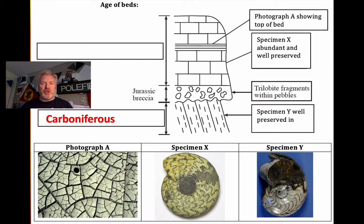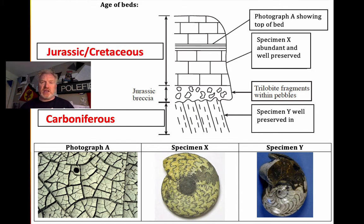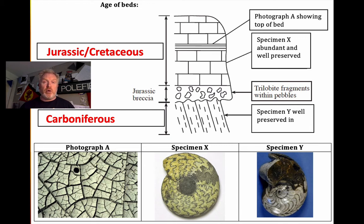The goniatite has a very simple suture line — it's quite curved. These fossils became most abundant in the Carboniferous. The rocks above where we find specimen X are going to be either Jurassic or Cretaceous. We know they must be Jurassic or younger because they're sitting on top of the Jurassic breccia. Specimen X is an ammonite — it's got that complex suture line. Because of that, we know it can only have been deposited in either the Jurassic or Cretaceous periods. We can't narrow it down any more because we don't know what type of ammonite it is.